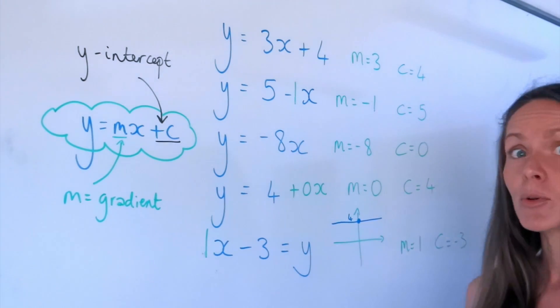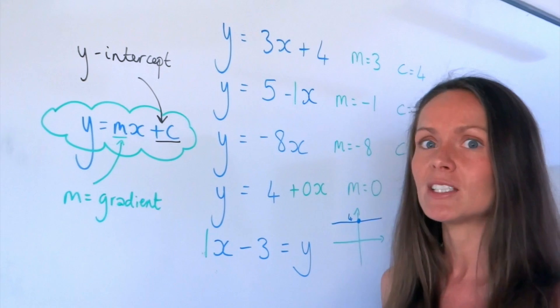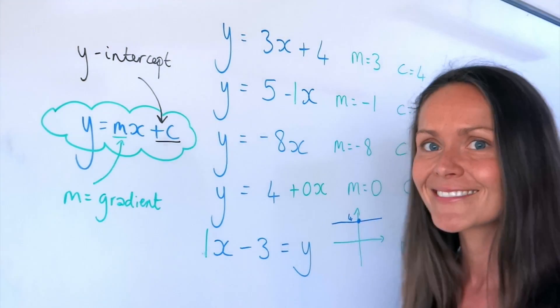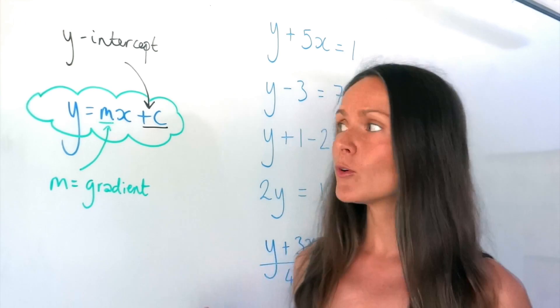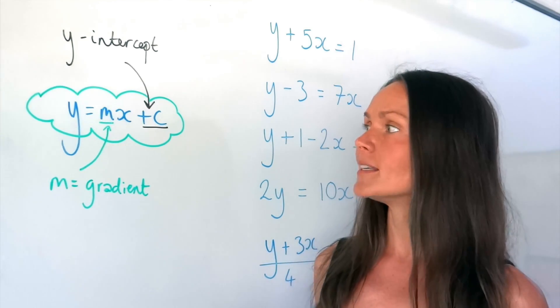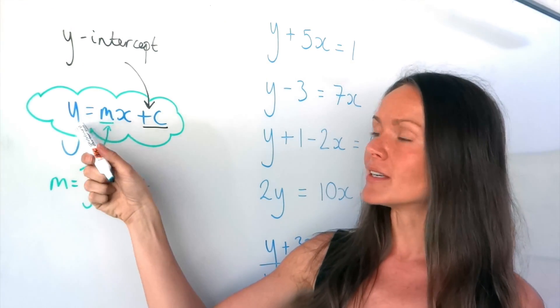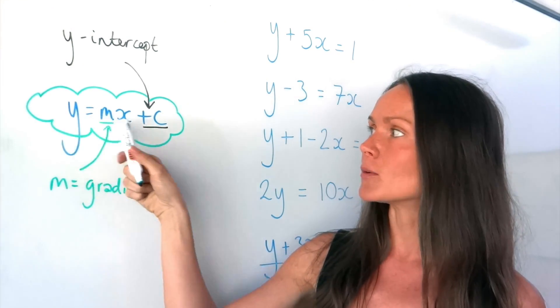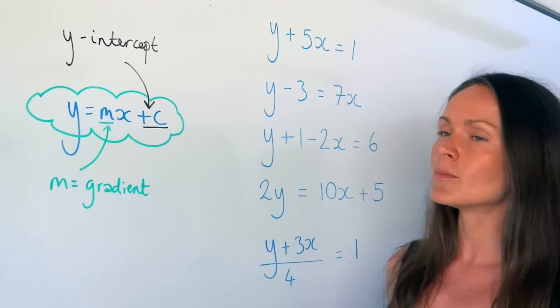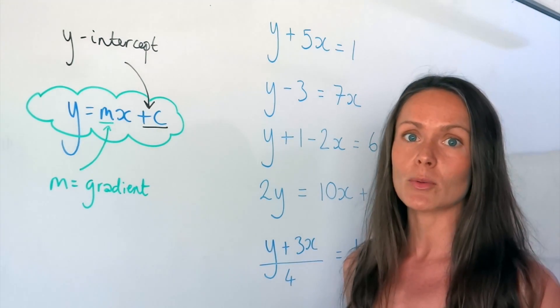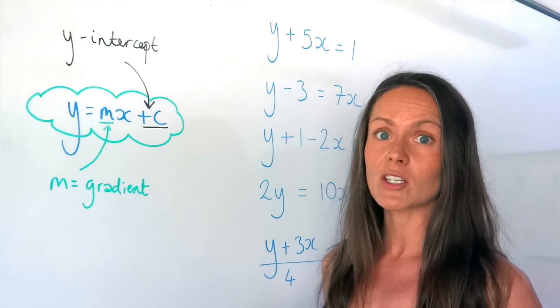Now I'm going to do a few harder examples where we need to rearrange the equation first. Remember, before we can pick out the gradient and the y-intercept, the equation needs to be in the format y equals mx plus c. In these equations, none of them say y equals, so we need to rearrange them first.